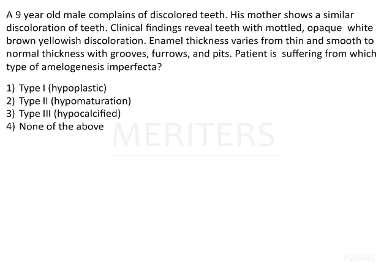The question is: a 9-year-old male presents with discolored teeth, and his mother shows a similar discoloration of teeth. Clinical findings reveal teeth with mottled opaque white-brownish-yellow discoloration. Enamel thickness varies from thin and smooth to normal thickness with grooves, furrows, and pits. The patient is suffering from which type of amelogenesis imperfecta?